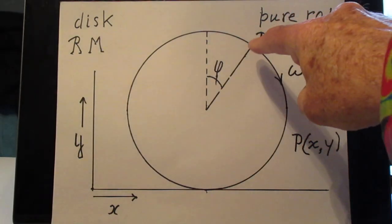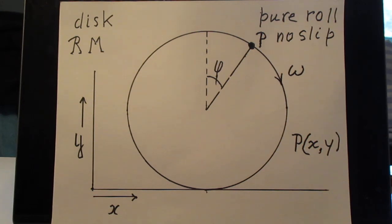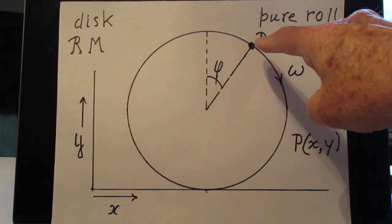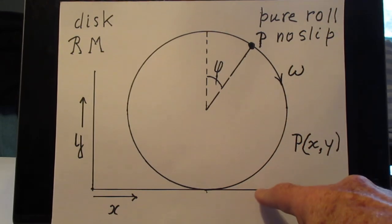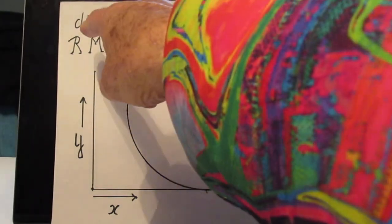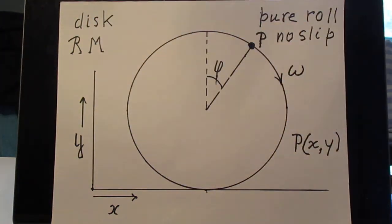Take this point P. This point P has position X and has here position Y.